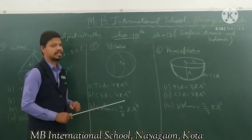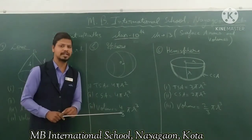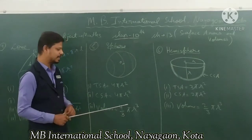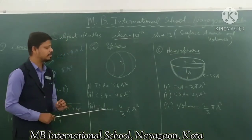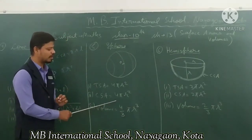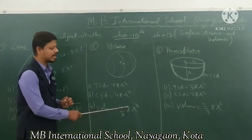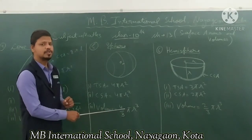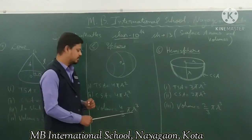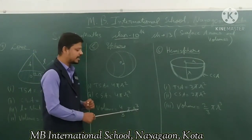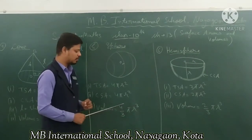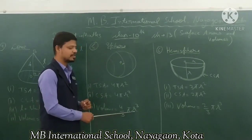The volume of a sphere is four upon three pi r cube, in cubic units. So the volume is four upon three pi r cube.